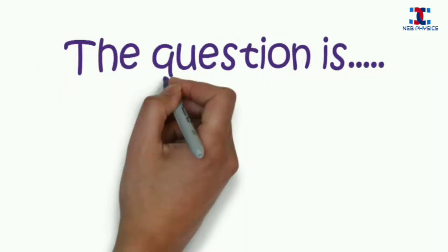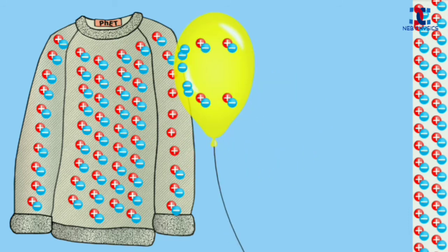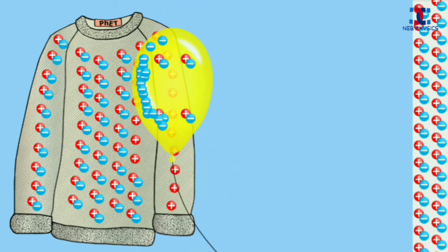Now the question is, why? Every atom in the matter has equal number of protons and electrons. But when a balloon is rubbed on woollen cloth, there is transfer of electrons from woollen cloth to balloon.